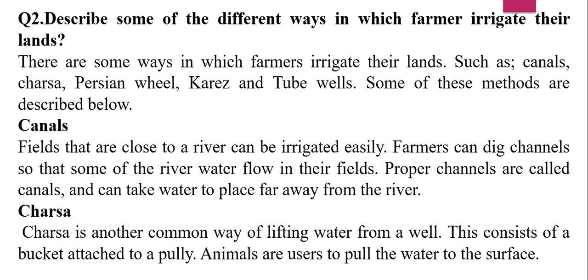Canals: fields that are close to a river can irrigate easily. Farmers can irrigate using channels so that some of the river water flows into their fields. Proper channels called canals can take water to places that are far away from the river.